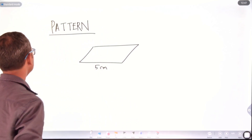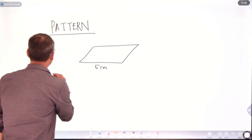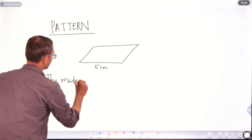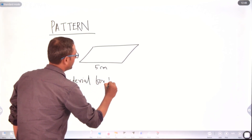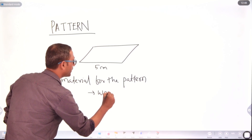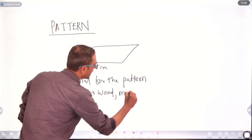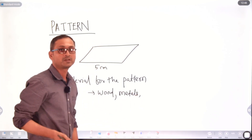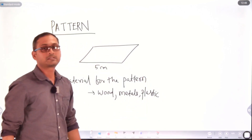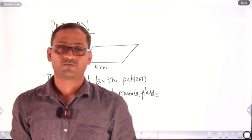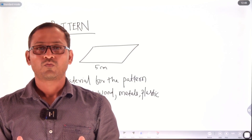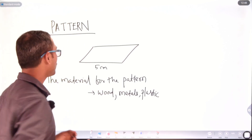The materials for the pattern include wood, metals such as cast iron, and also plastic. Now we come to the subject of how many types of patterns there are and what are their utilities. I will go to the types of pattern.